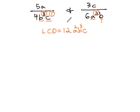And so, what we want is to build up our denominators to 12a squared b cubed c. We can do this by multiplying by any missing factors. To build a 4 up to 12, we have to multiply by 3.